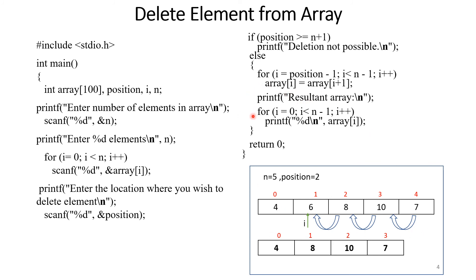To display the new array after deletion, we use a for loop: i equals 0, i less than n minus 1. We use n minus 1 because the array size decreased by 1 — originally index 0 to 4, now 0 to 3 after deletion. That's why we write i less than n minus 1.